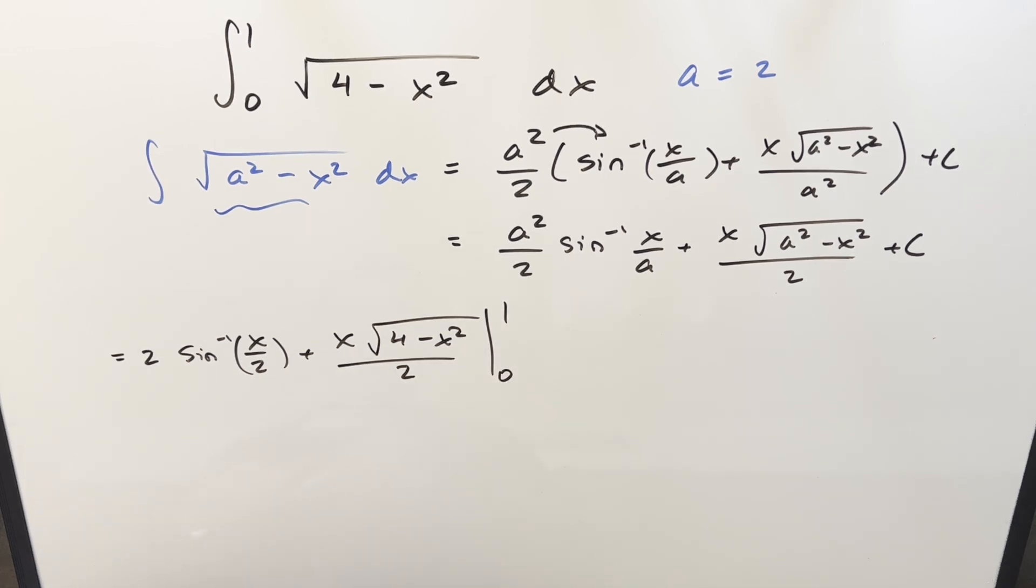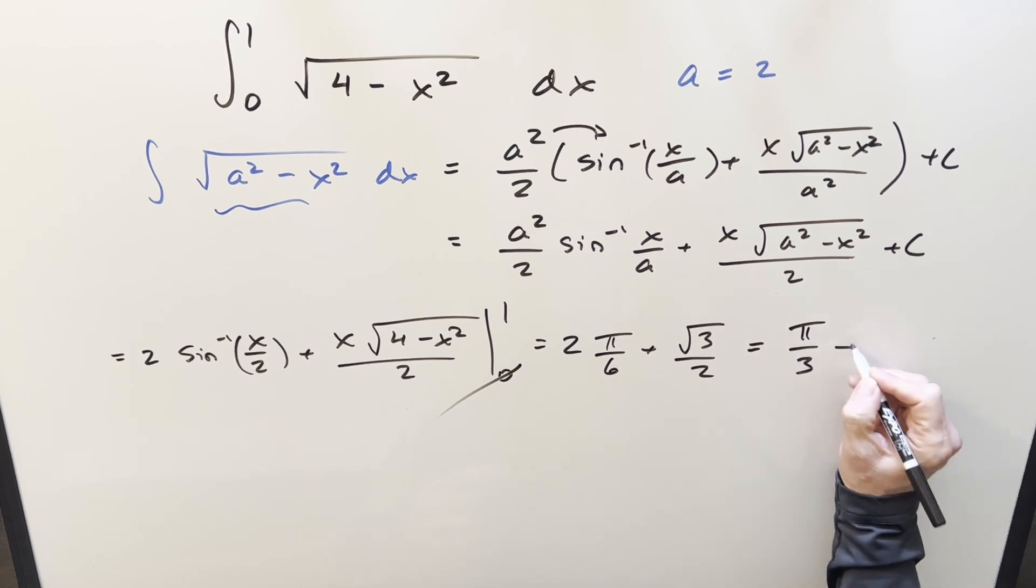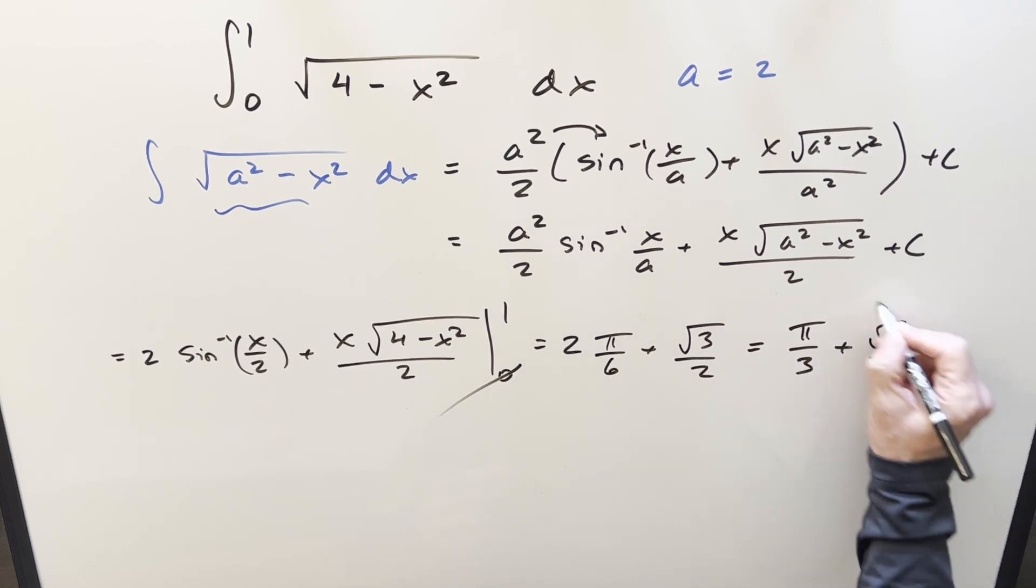Well, you plug in 0, everything's 0, don't worry about that. Plug in 1, we're going to have 2 arcsine of 1 half, that's going to happen at pi over 6, that's nice. Plug in a 1, that's just 1, we're going to have 4 minus 1 or just square root 3 over 2. Multiply it out, for my final solution, we have just pi over 3 plus square root of 3 over 2, and that's it.